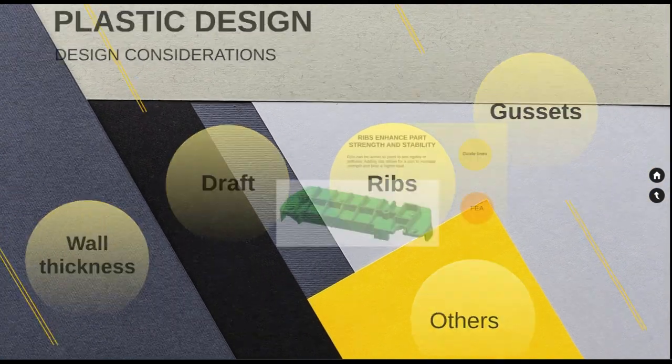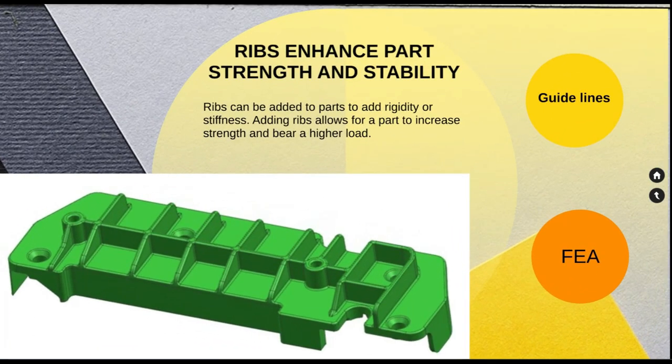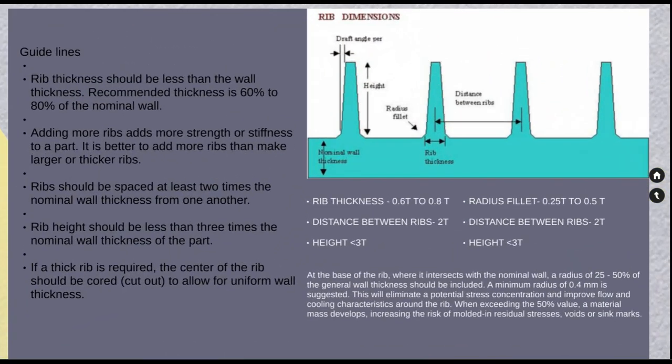The third design consideration is the amount and dimension of ribs. Addition of ribs enhances part strength and stability, increasing the ability of the parts to bear higher loads. Some guidelines for rib design: the rib thickness should be less than the wall thickness — the recommended thickness is approximately 60 to 80 percent of the nominal wall thickness. Adding more ribs adds more strength and stiffness to the part; it is better to add more ribs than to make a thicker part.